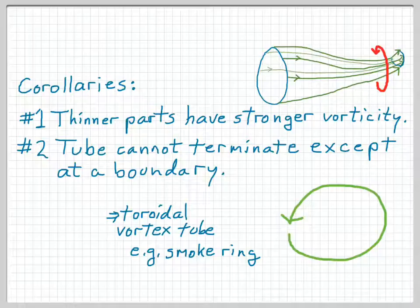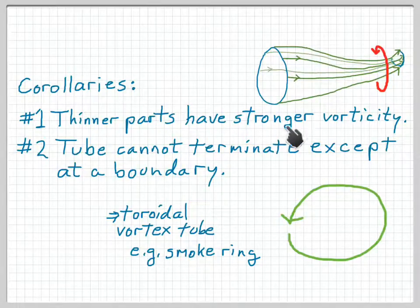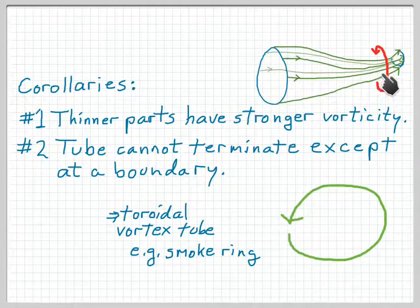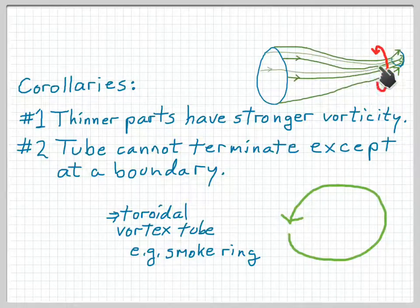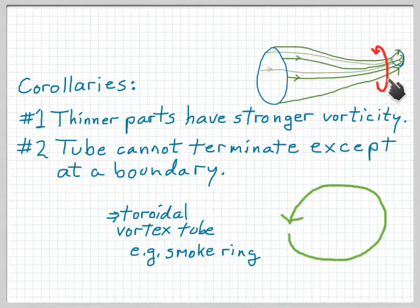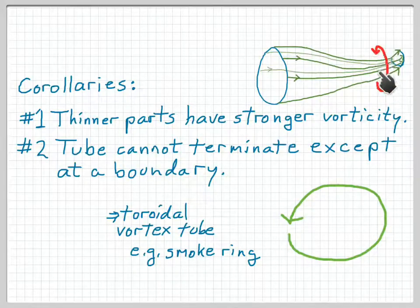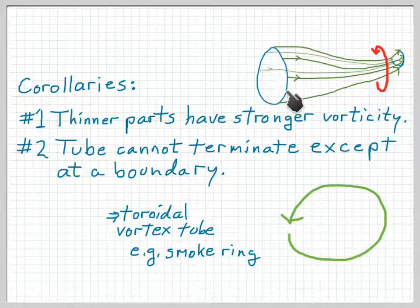Helmholtz's theorem has a couple of interesting corollaries. The first is that thinner parts of a vortex tube have stronger vorticity. Because the circulation must be the same everywhere, and circulation equals the integral of vorticity through the cross section, a smaller cross-sectional area requires larger vorticity to compensate. So thin areas have relatively strong vorticity, while thicker areas have relatively weak vorticity.